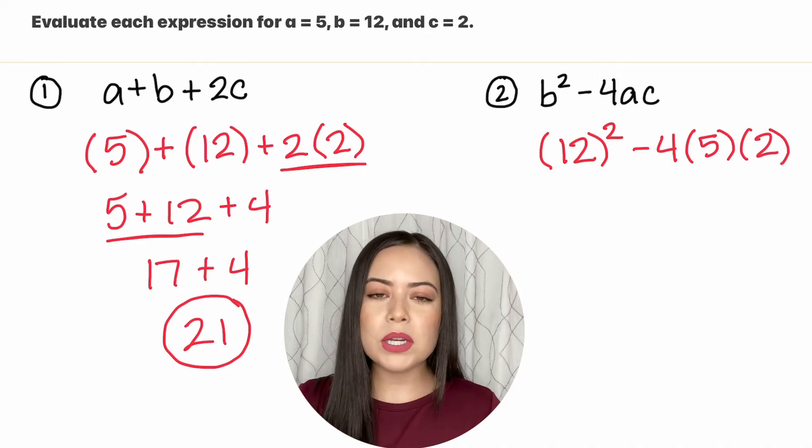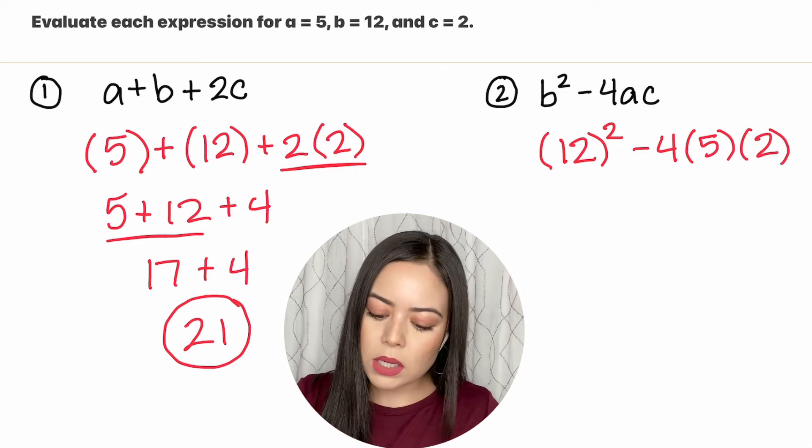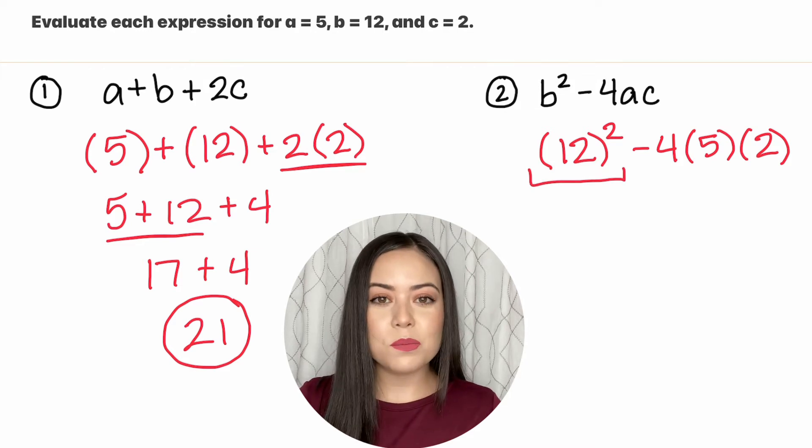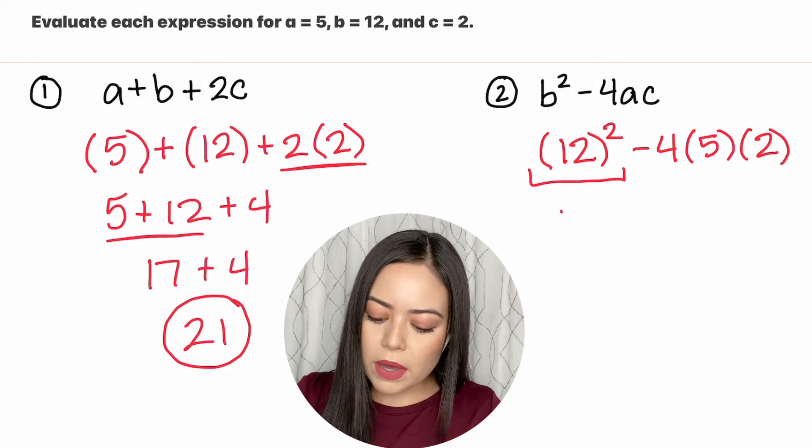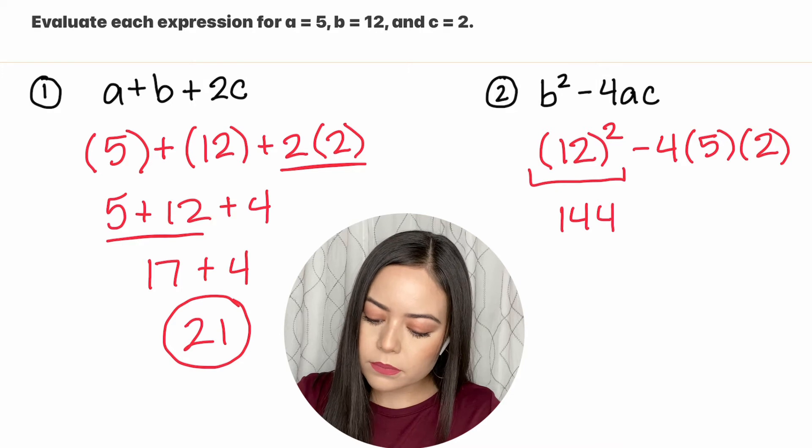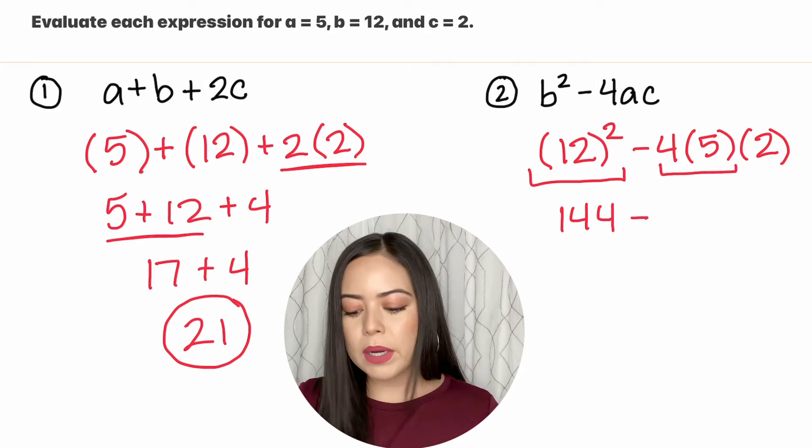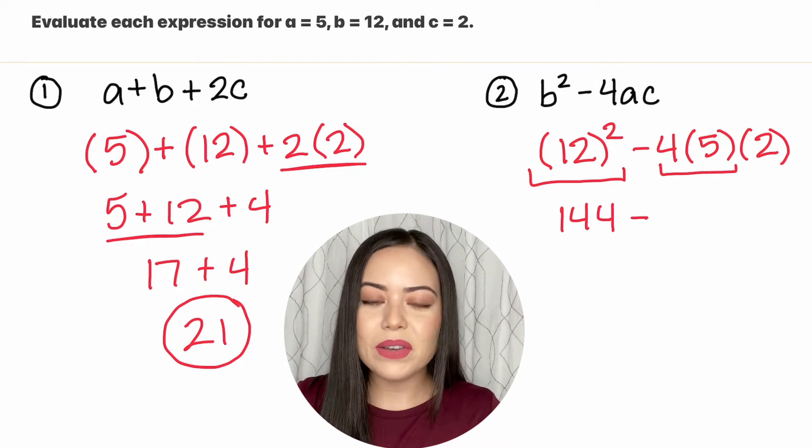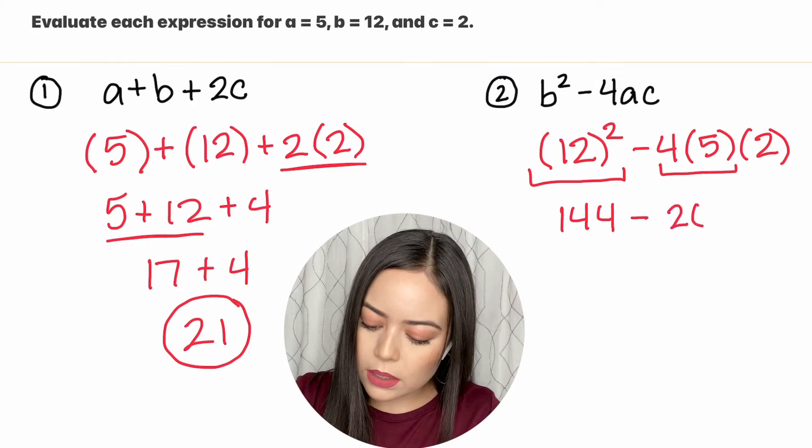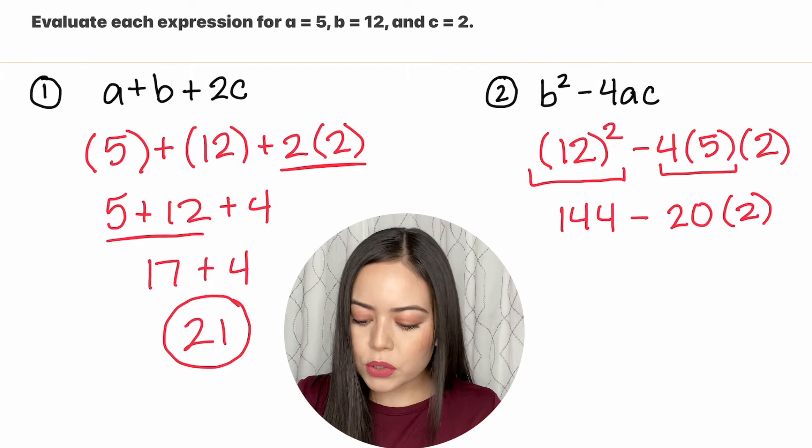Following order of operations we need to do the exponents first. So let's evaluate 12 squared which means 12 times 12. That is 144 minus, and so let's multiply from left to right. So negative 4 times 5 is negative 20 and let's bring down that extra 2.